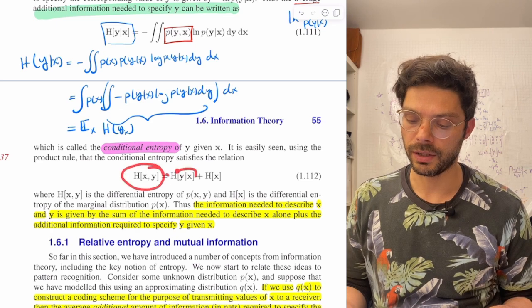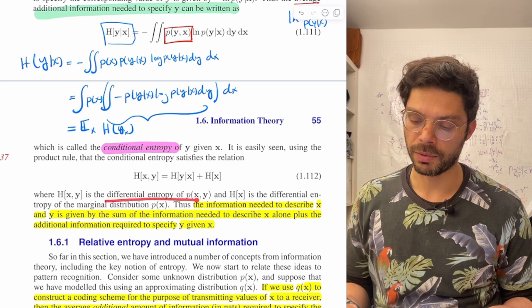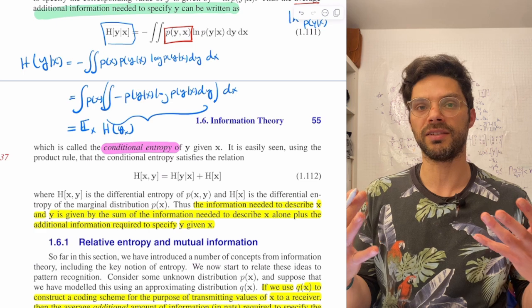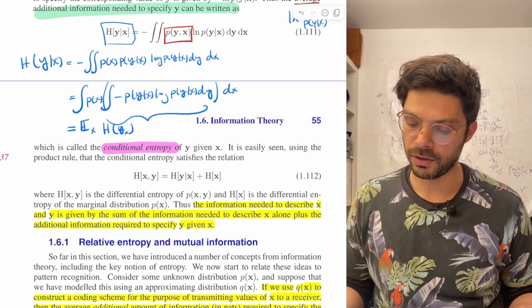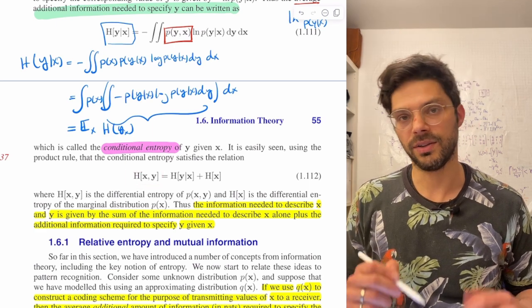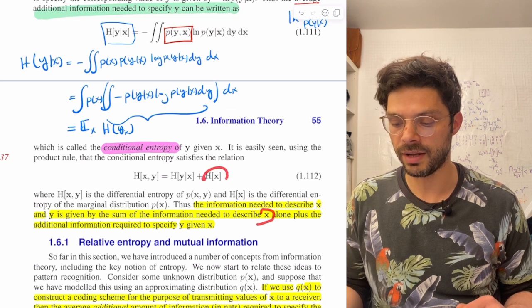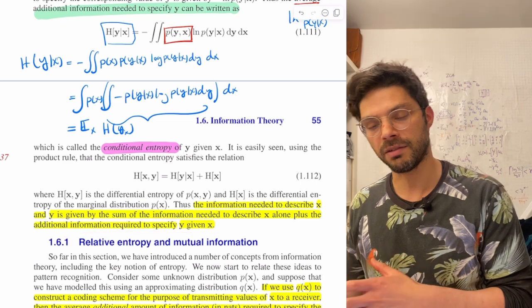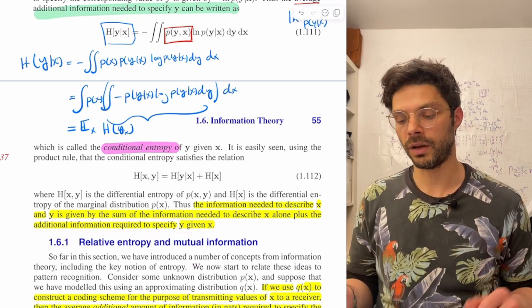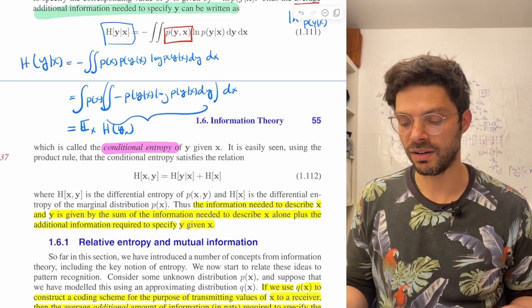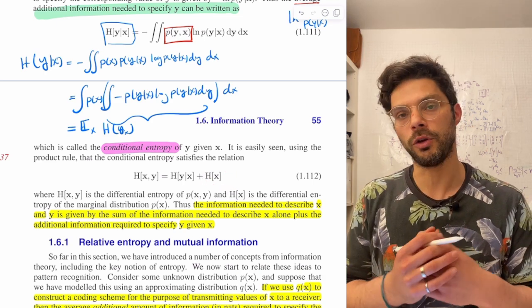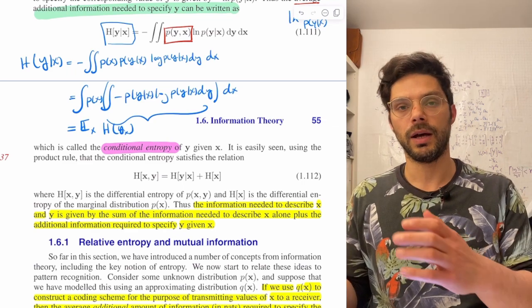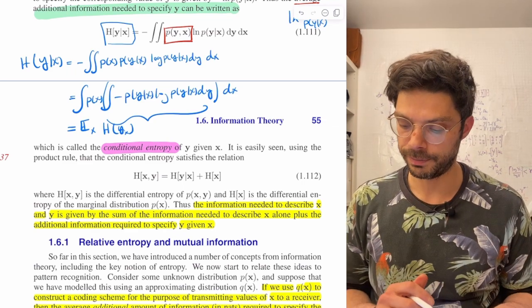So this is the differential entropy of the joint distribution. What that means, and I think what's really nice about a lot of these entropy formulas, is they actually make a lot of sense when you say them in words. It says the information needed to describe x and y, that's h of x, y, is the sum of the information needed to describe x alone, that's h of x, to specify that prior distribution, plus the information needed to specify y given x. So kind of a very intuitive result. The joint entropy is the sum of h of x and the entropy you need to specify y given x, averaged over the values of x you're going to observe. Quite intuitive.